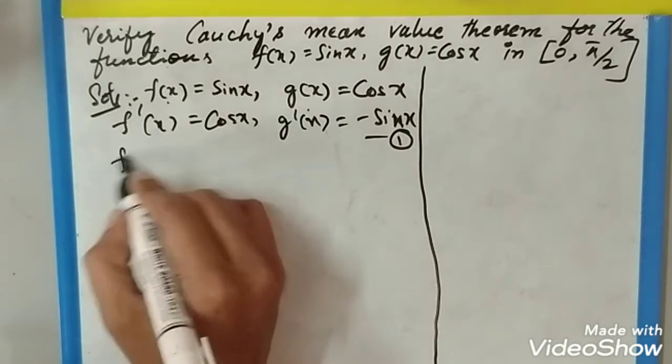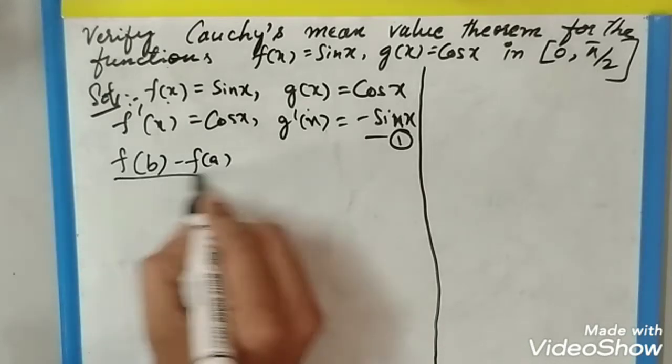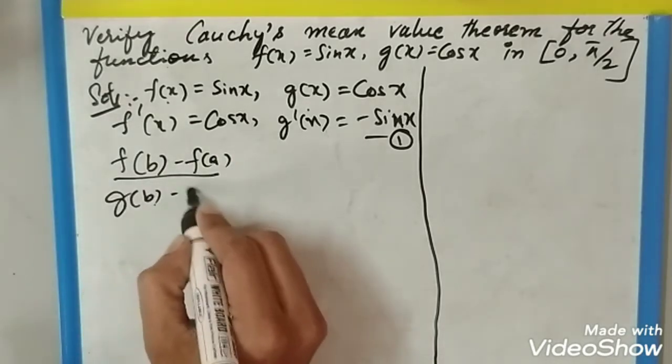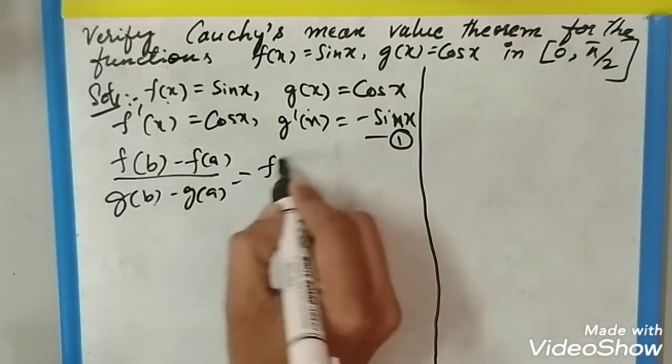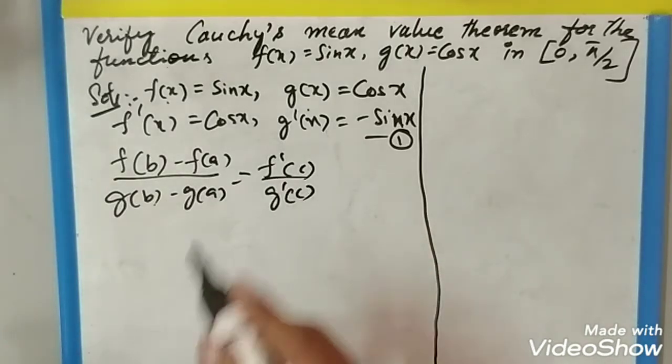[f(b) - f(a)] / [g(b) - g(a)] = f'(c) / g'(c). Now substitute the values of b and a.